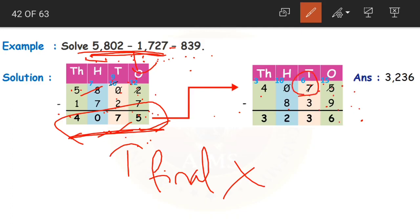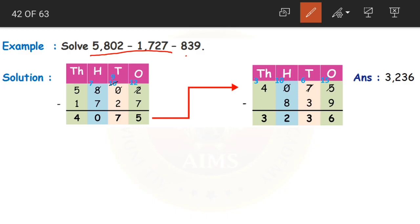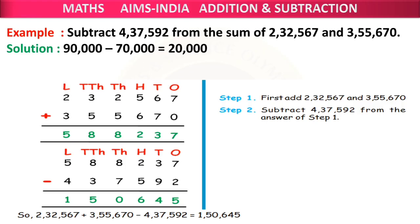From 4075 minus 839: 5 minus 9 is not possible so we borrow — 15 minus 9 is 6; 6 minus 3 is 3; 0 minus 8 is not possible so we borrow — 10 minus 8 is 2; 3 as it is. So our final answer is 3236. First we subtracted the first two numbers and then from the difference we subtracted 839.